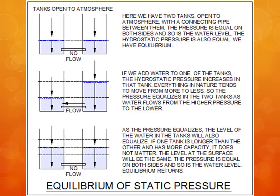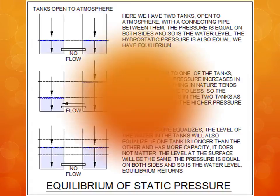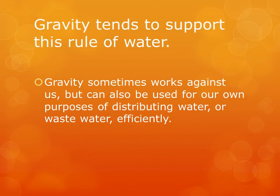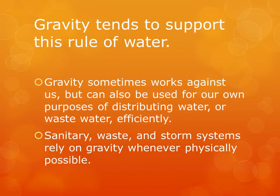When one tank on the right has a higher level, there will be flow toward the lower level — just like everything else in nature, it flows from more to less: higher temperature to lower temperature, higher pressure to lower pressure. Then equilibrium is reached and there is no flow. Gravity tends to support this rule — it sometimes works against us, but can also be used for distributing water or waste water, which is almost always under gravity. Sanitary waste and storm systems rely on gravity whenever physically possible.